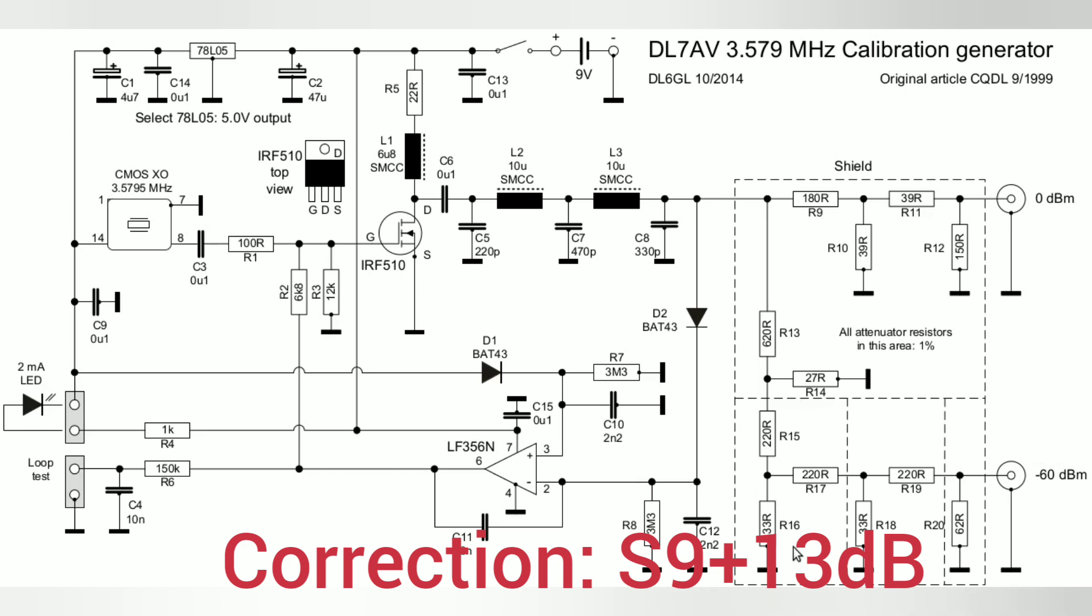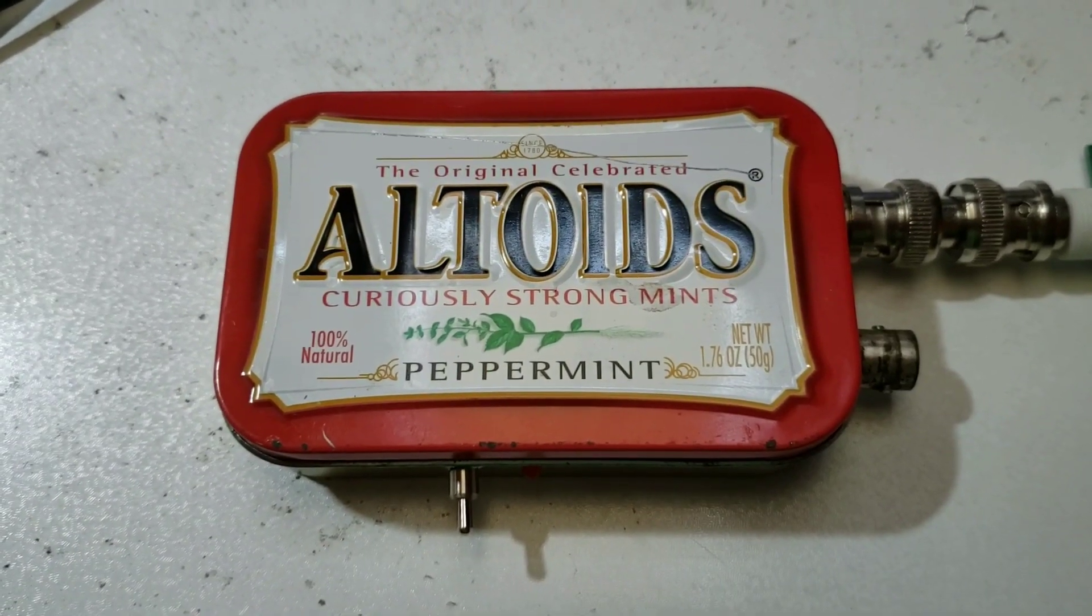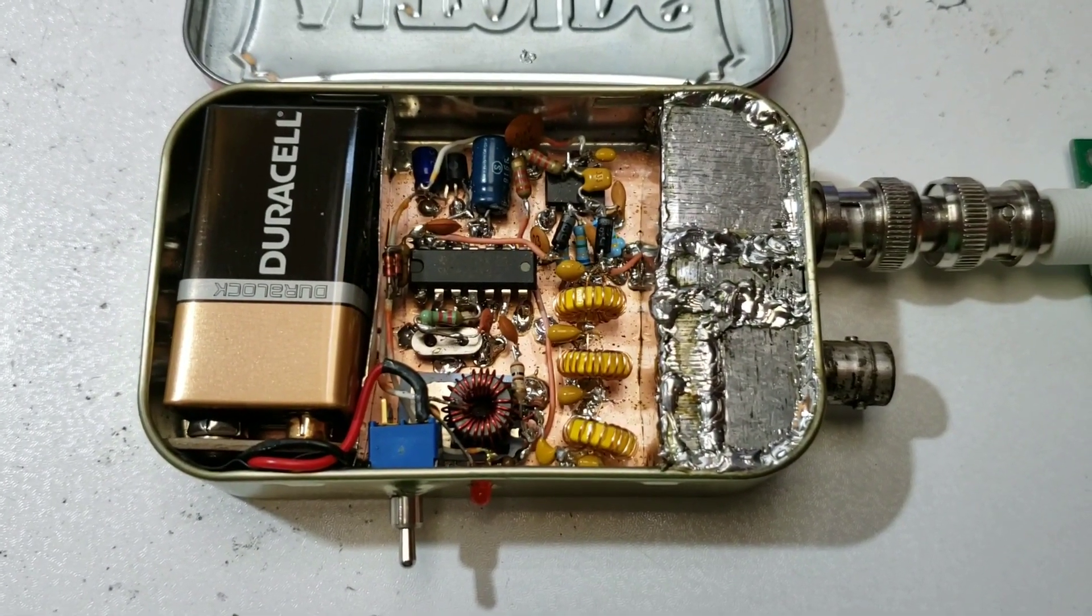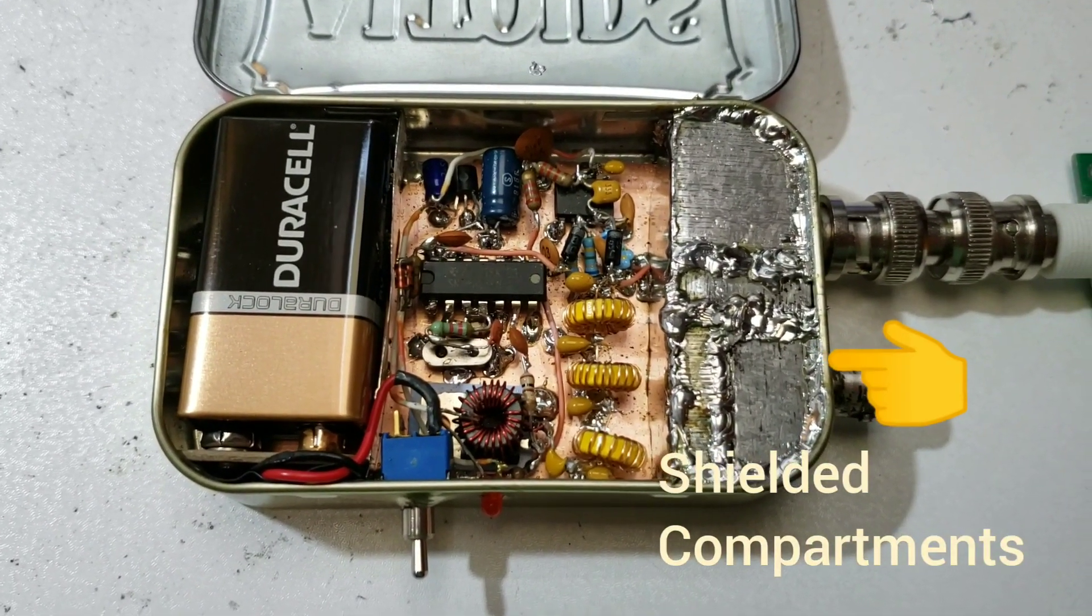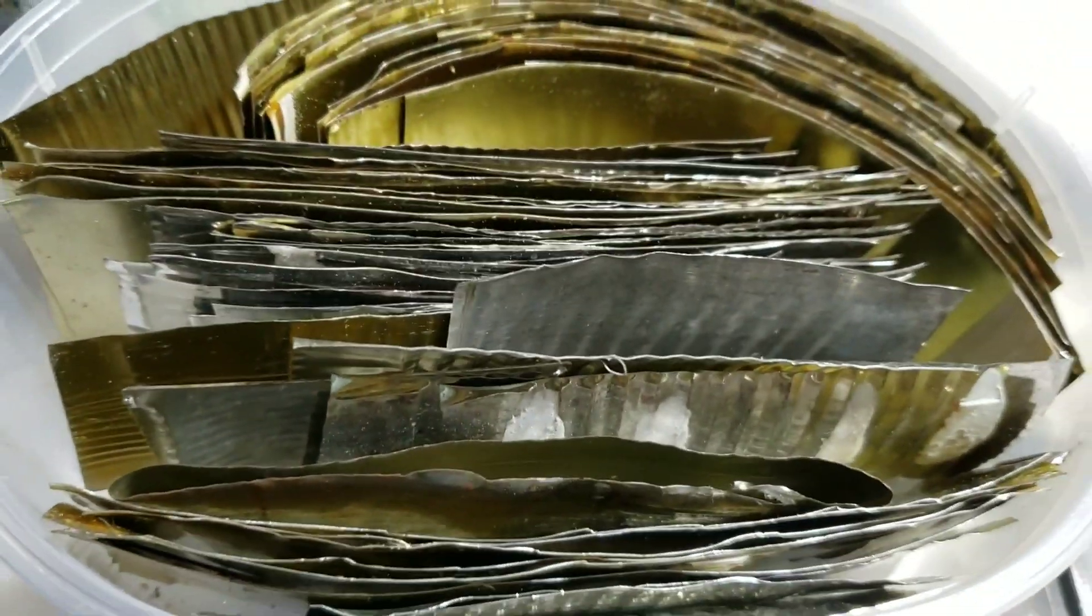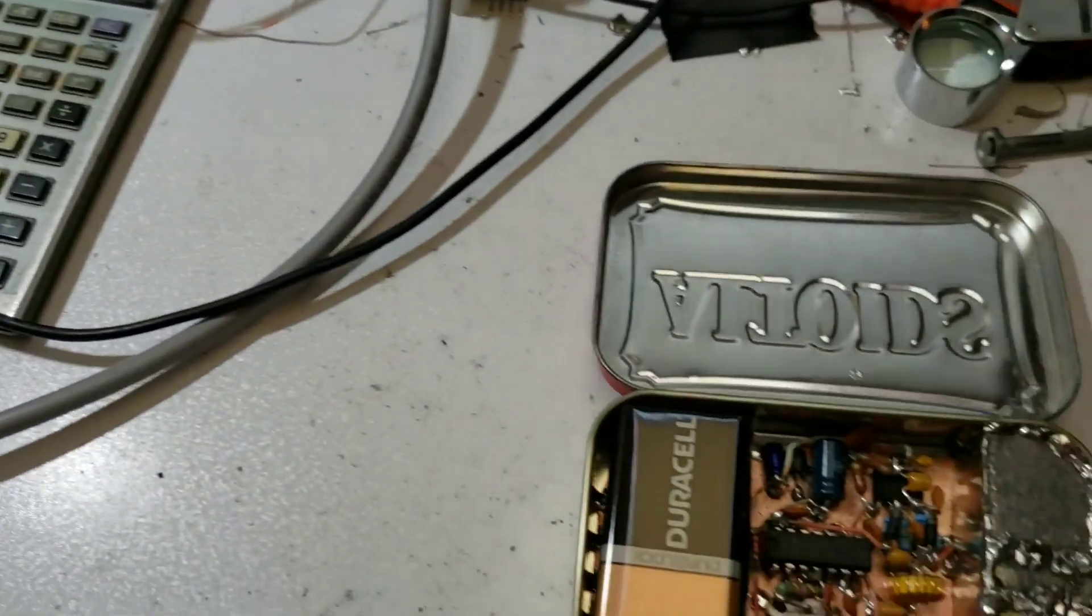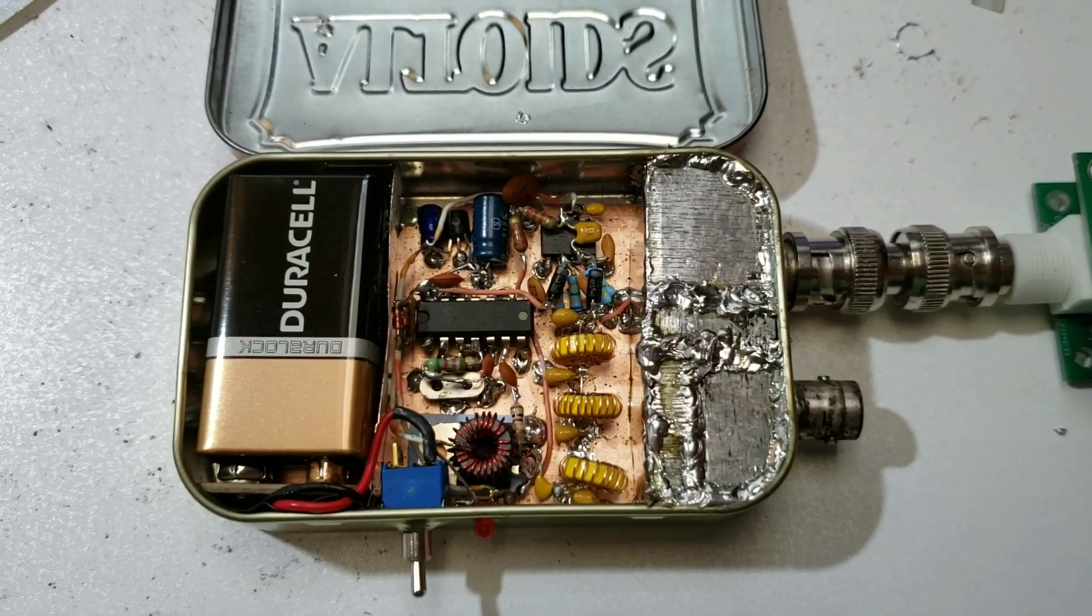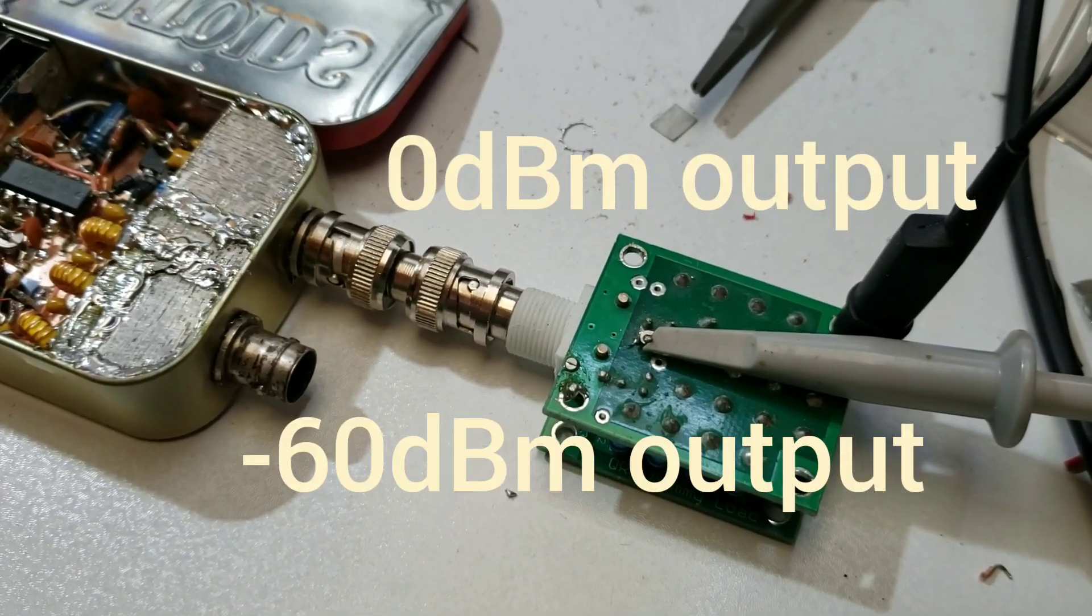It's a very low signal level, so these sections all need to be shielded very carefully. My actual construction fits in one of these famous Altoid tins. Inside you'll see the space for battery, the circuit in the middle, and on the right, shielded boxes made from tin can remains.